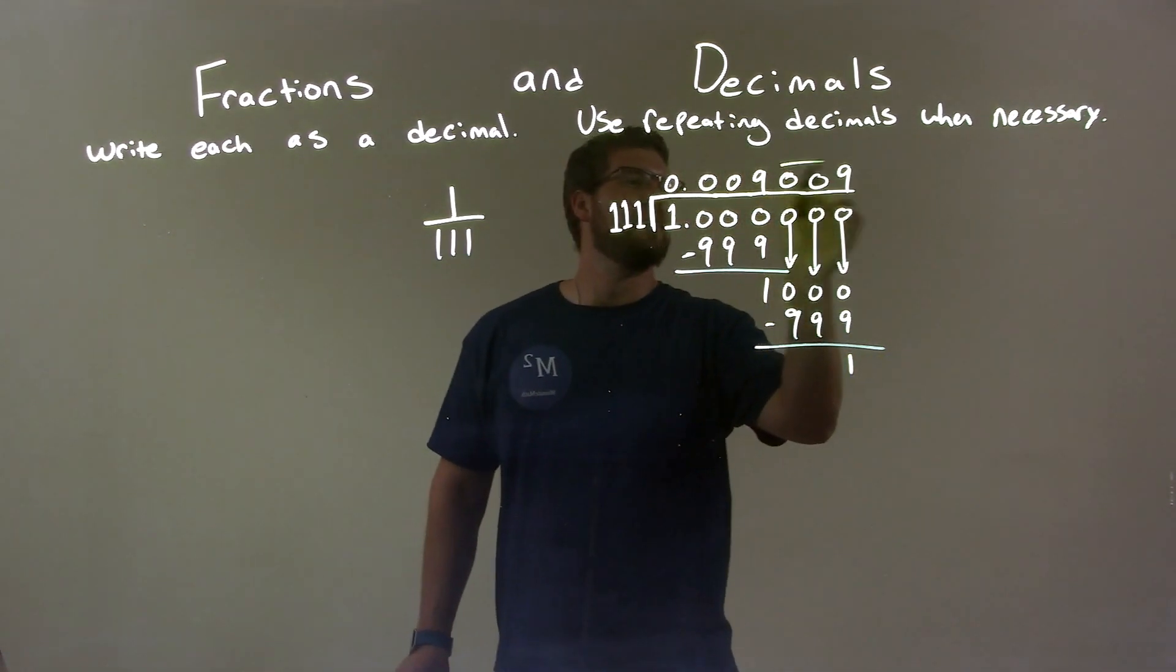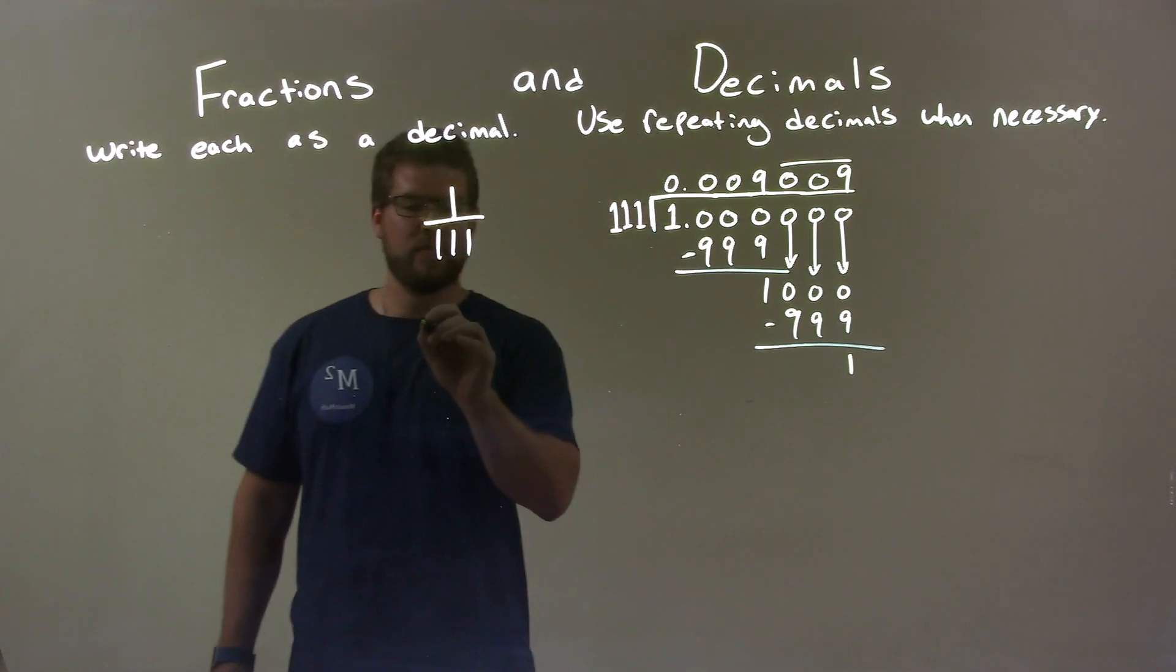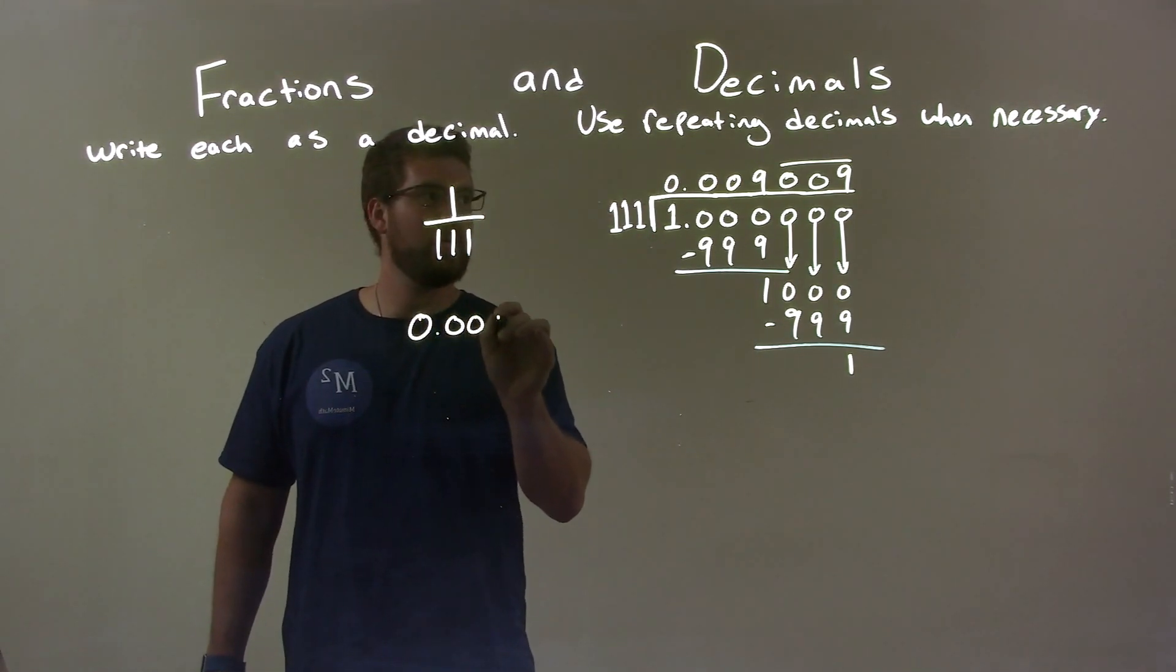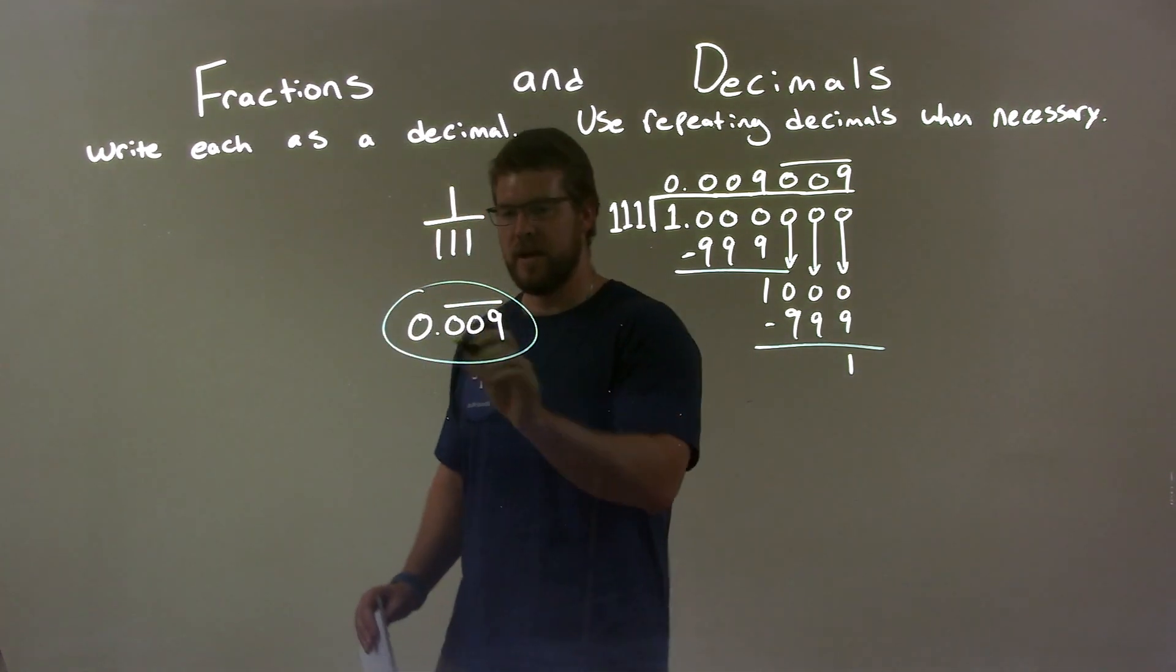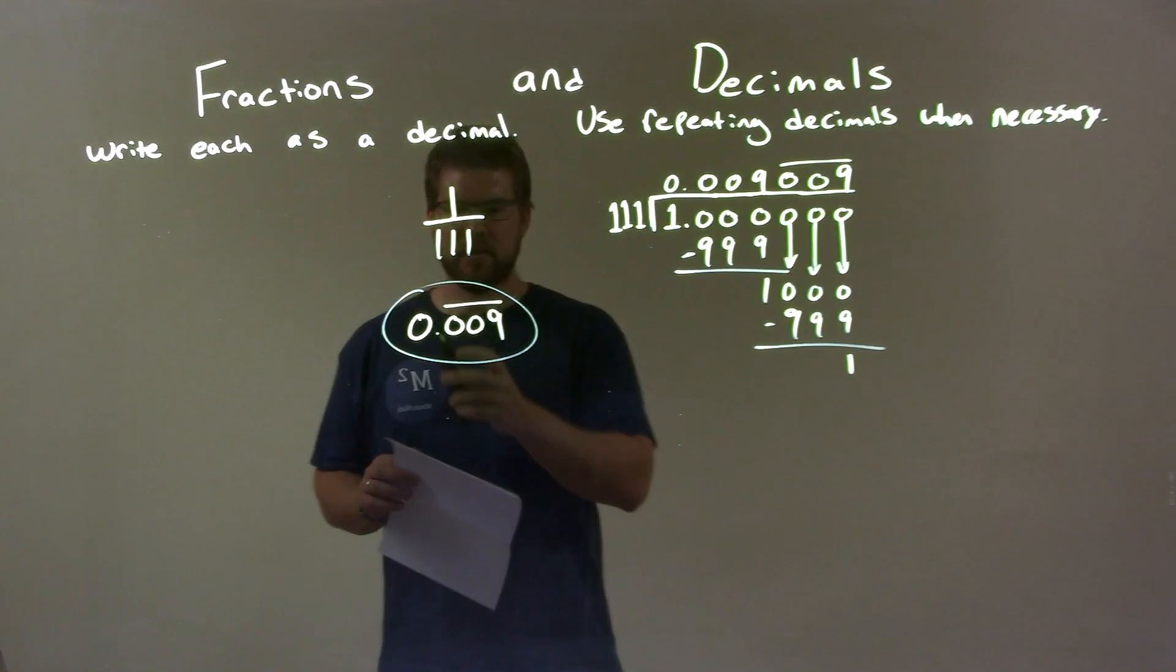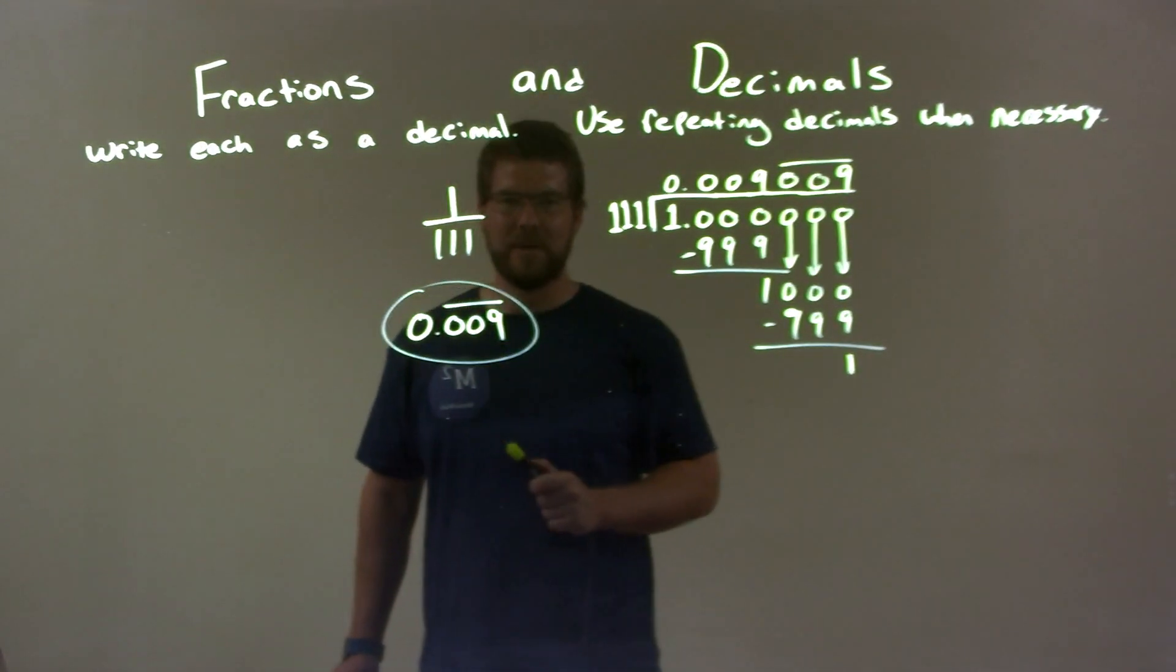And so we have 0.009 as a repeating decimal. And so our final answer is 0.009. We just repeat that part there. We only need to write it once. So again, our final answer is 0.009 with 009 repeating.